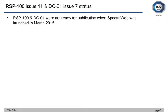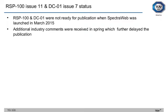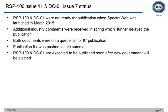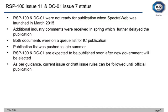RSP100 Issue 11 and DC01 were not ready for publication when the new SpectraWeb application launched in March 2015 — they were supposed to be simultaneously launched. Additional industry comments received in spring delayed the publication, which was pushed to late summer. They are expected to be published soon after the new government is elected. As per guidance, the current draft issue rules can be followed, so any rules provided in the April 2015 workshop can be followed if they refer to the latest version of the standards until official publication.